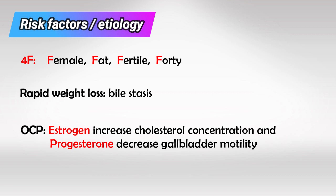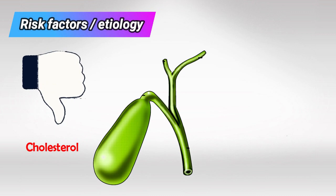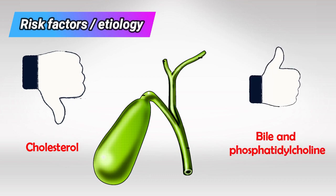If you get a question asking about the risk factors for gallstones on your Step 1 exam, most of the time you're going to find the answer on this page. In the gallbladder, cholesterol is the main factor predisposing to gallstones, while bile and phosphatidylcholine are protective substances against gallbladder stones.